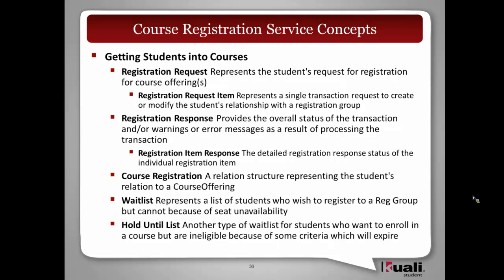That cart gets pulled together and processed for registration. Similar to the overall request — the cart made up of individual items — there will be a response back on each item and then for the overall piece. From a service perspective, we need to support 'get into as many as I can' or an all-or-nothing scenario. By breaking up the underpinnings of registration this way, we can support either. Once the response comes back and everything is good, we have what we're calling a course registration — the relationship between the student and the course offering.